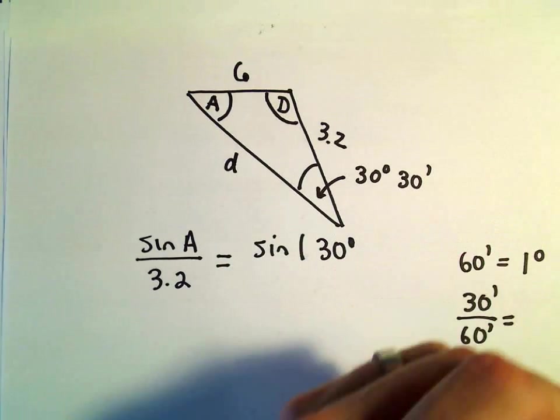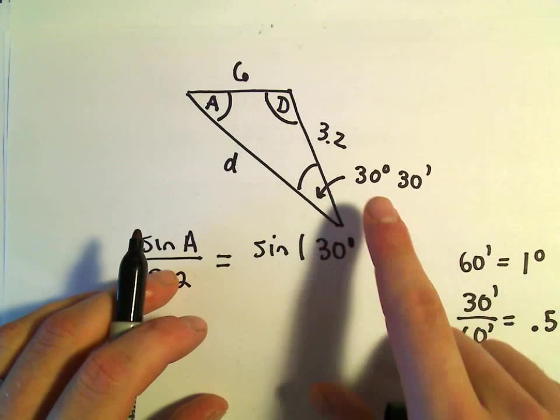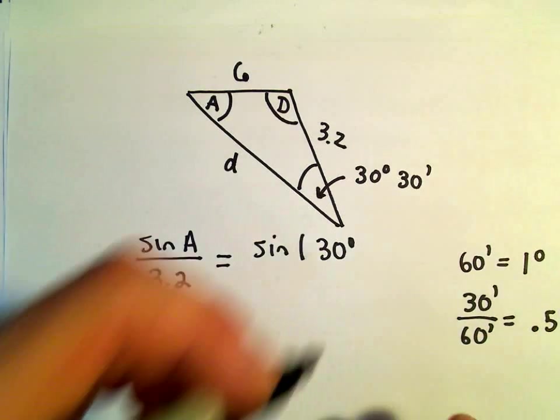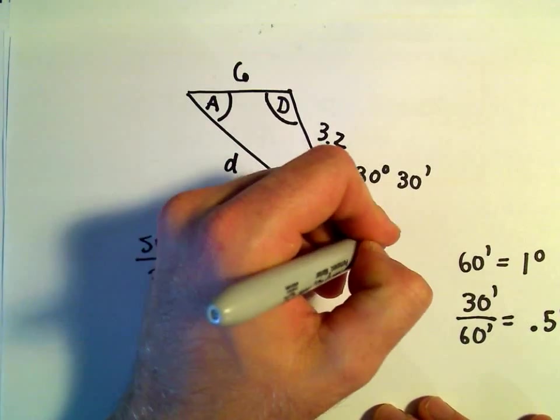So actually, what that's going to give us is one half of a degree, or 0.5 degrees. So really, we can write that as 30.5 degrees.